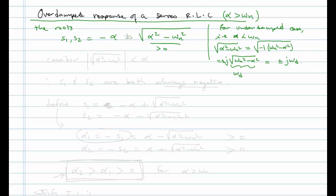This quantity is greater than zero. The magnitude of the square root of alpha squared minus omega_n squared is always less than alpha. So although we have minus alpha plus and minus both permutations, S1 and S2 are both always negative. That's important.